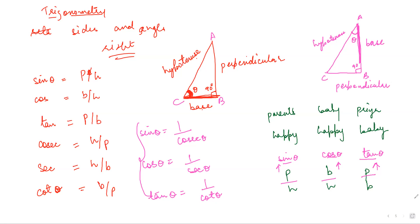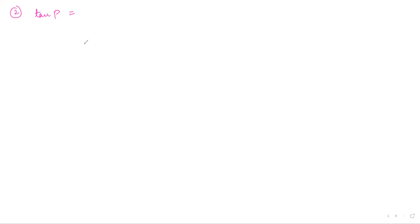Now for question 2: how much is tan P? The answer is 5 by 12. And how much is cot R? Also 5 by 12. So tan P minus cot R equals zero.